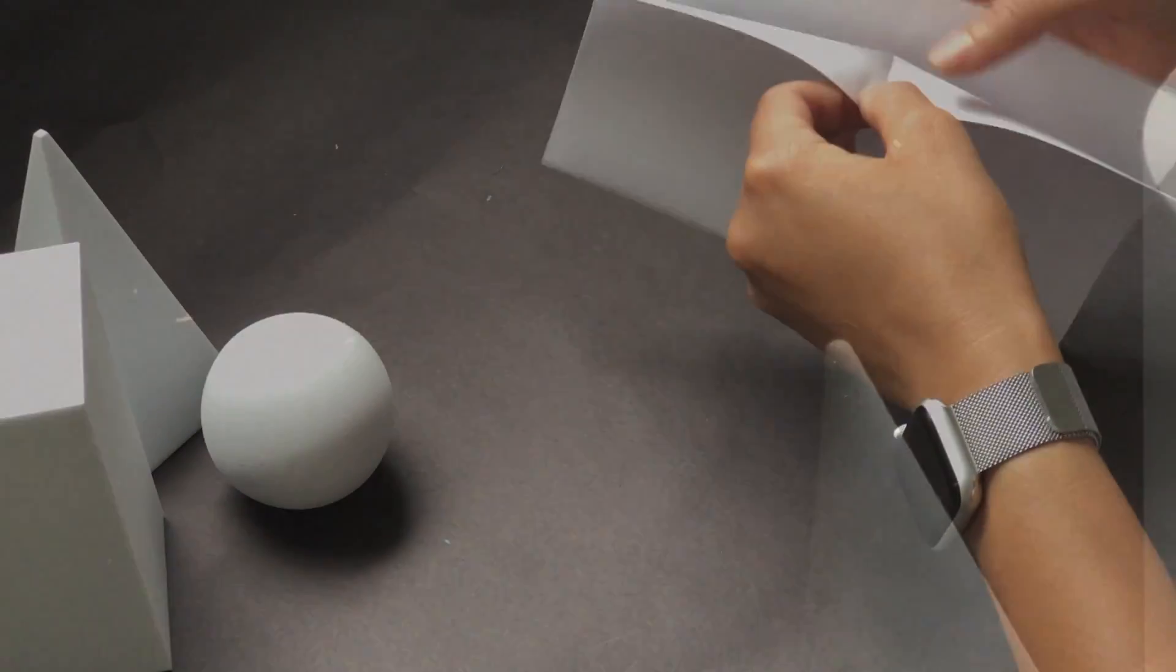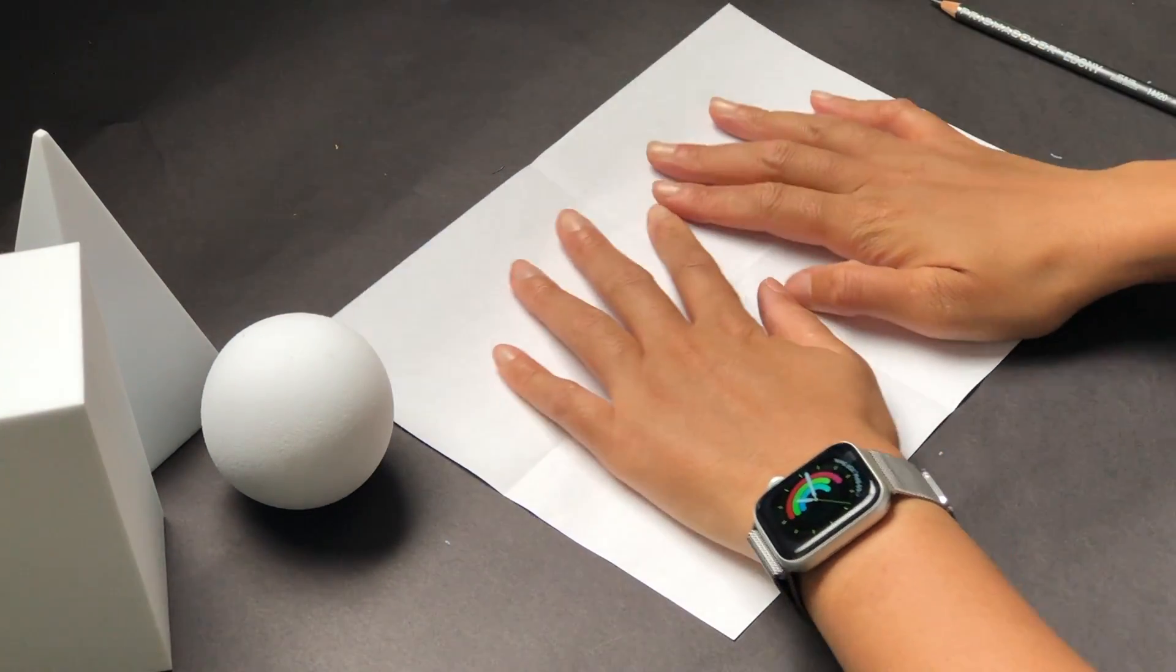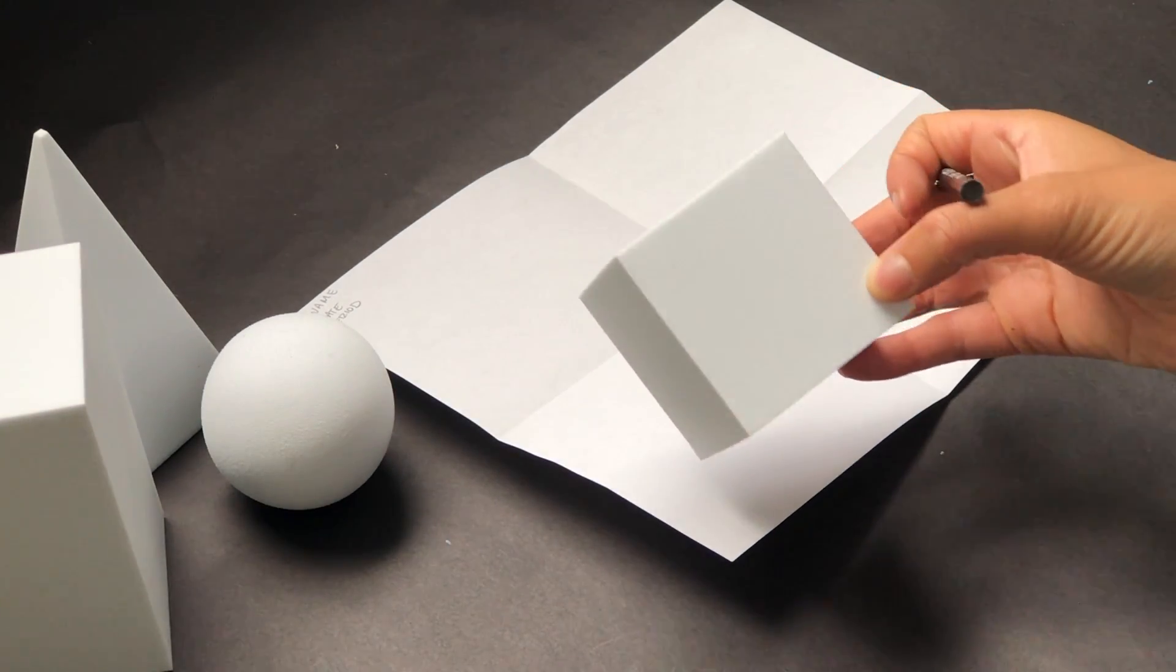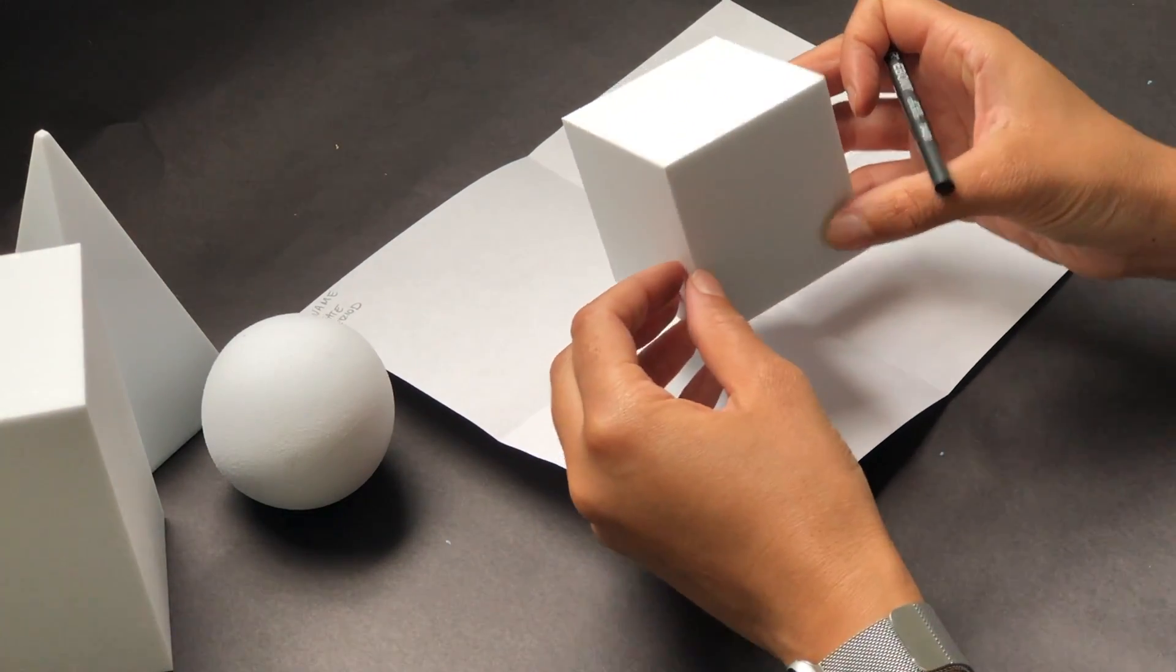You now have four sections on your paper. You will fill each section with a different drawing. We will begin with a cube.